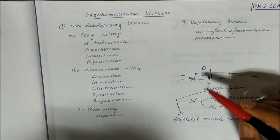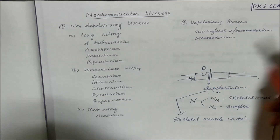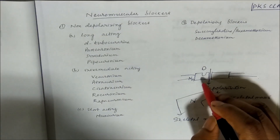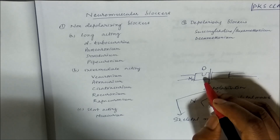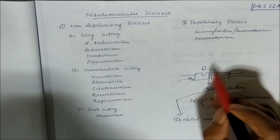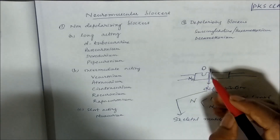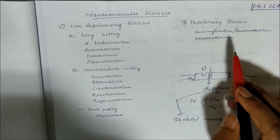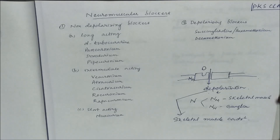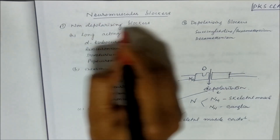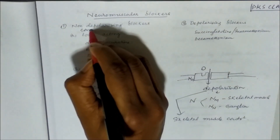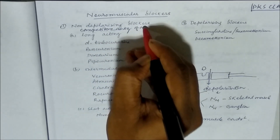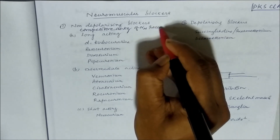In our last class, nicotine produces initial depolarization followed by depression or depolarization block with prolonged action. Similarly, this nicotinic muscular receptor can also be blocked by using competitive antagonists. So non-depolarizing blockers are the competitive antagonists of the nicotinic muscular receptor.